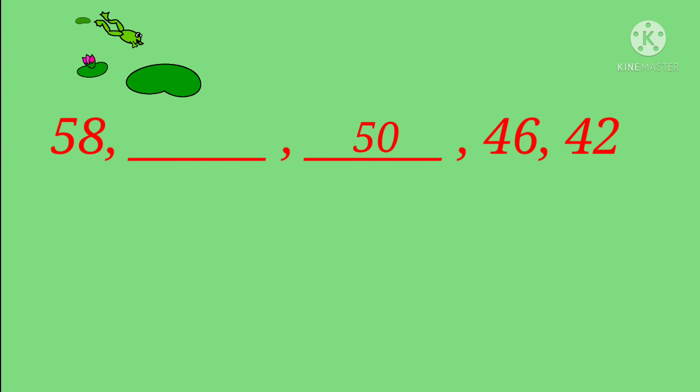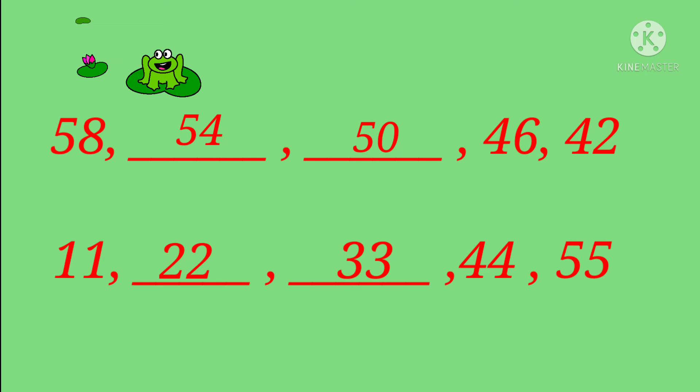Now we will count 50 plus 4 because this is a skip counting of 4. So 50 plus 4 is 54. Here our series is complete. Another example is 11, dash, dash, 44, and 55. In a similar manner we will find out the relation between 44 and 55, which comes to 11. So it means this is a forward counting. We will add 11 to each number. So 11 plus 11 is 22. We will again add 11 to 22, so 22 plus 11 is 33. They can do this rough work in the rough column and in this manner they will complete the skip counting sheets.